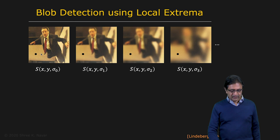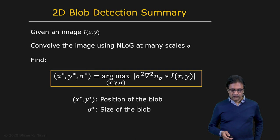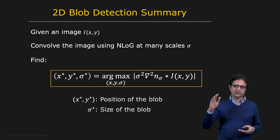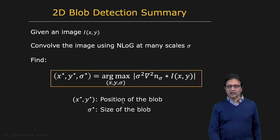If you look at a different point on a flat region where there's nothing much going on, you get lower values with no clear extremum, and therefore there is no blob in that case. To summarize blob detection in 2D: given an image I(x,y), you convolve it with the NLoG operator at many different scales. You end up with a stack or volume, and you find the extrema in that volume. Each extremum's position (x-star, y-star) corresponds to the position of a blob, and the sigma found at that point corresponds to the size of the blob.